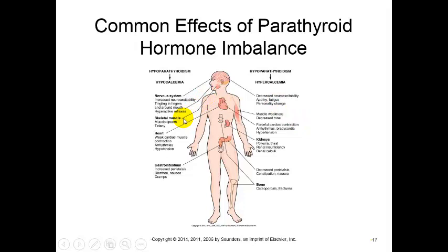Skeletal muscles can have spasms with hypoparathyroidism. With high calcium levels you can have increased weakness of skeletal muscles and decreased tone. With the heart it's kind of the opposite - you have weak contractions with hypocalcemia, and with hypercalcemia you have forceful contractions which can also lead to arrhythmias, increased heart rate, and hypertension.